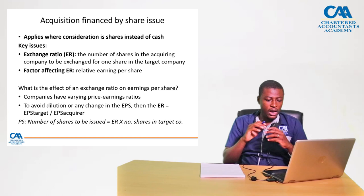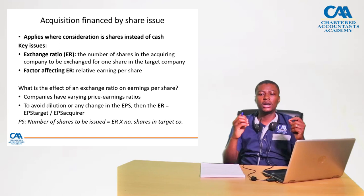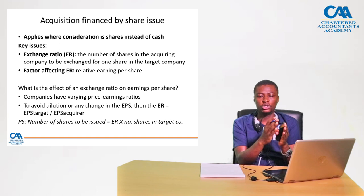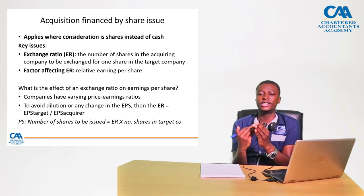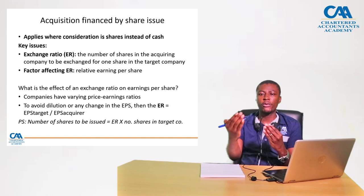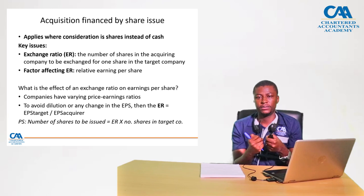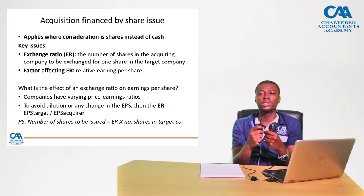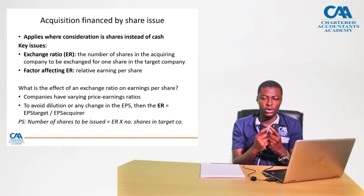Now let's look at acquisition financed by share issue. Using the example of Company A and Company B: Company A wants to acquire Company B. Company B already has existing shareholders, so Company A can say to those shareholders: I'm going to give you shares in Company A in exchange for your shares in Company B. The key question is which ratio we use for the exchange — this gives us what we call the exchange ratio, which is the number of shares in the acquiring company to be exchanged for one share in the target company.